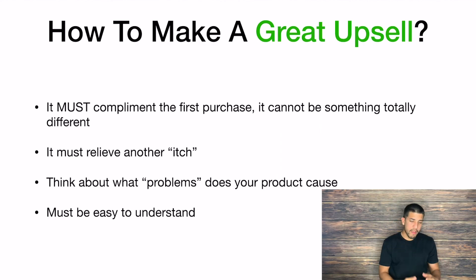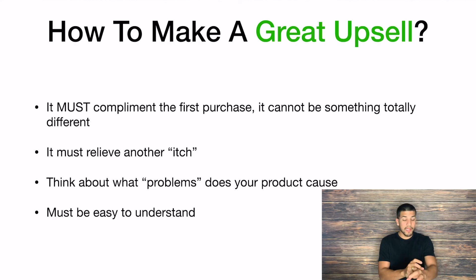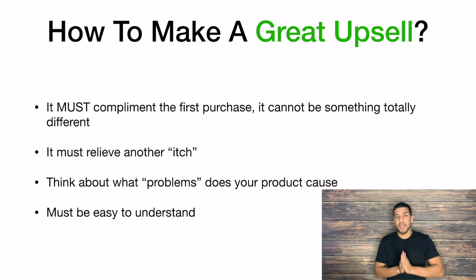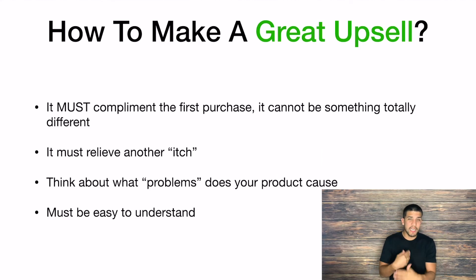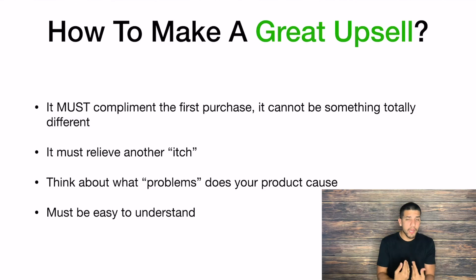If you're selling watches, think about what an upsell for a watch would be. Why do people get other watches? They want something different. So if they have a leather band, try to offer them another solid band, a different color band, another type or material of band — that could be another upsell. One of the most important things: it has to be easy to understand. If you have to resell them on the concept of why they want another watch, it's not going to work. It has to be super easy to understand and a no-brainer — that's how you make a great upsell.